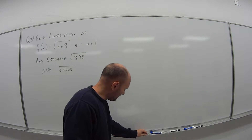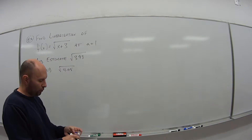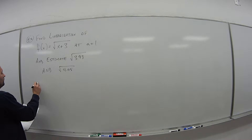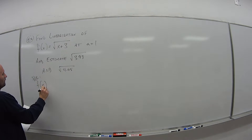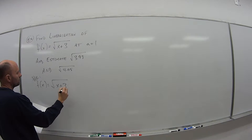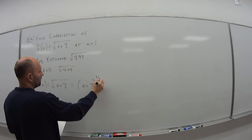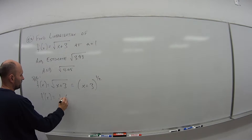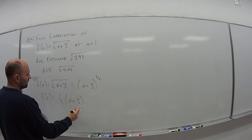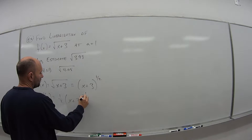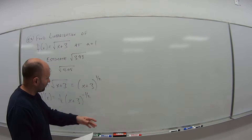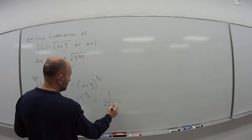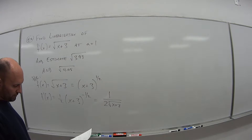First, we need the linearization — a line that approximates the function √(x + 3). My f(x) = √(x + 3), which is the same as (x + 3)^(1/2). If I take the derivative, I bring down the 1/2, rewrite what's inside. Because it's x + 3, the derivative of x is just 1, so applying the chain rule I'm still just multiplying by 1. This gives (x + 3) to the minus 1/2, which means f′(x) = 1 over 2√(x + 3).